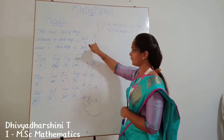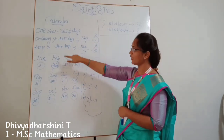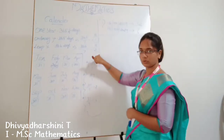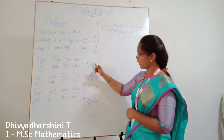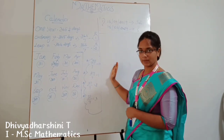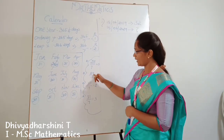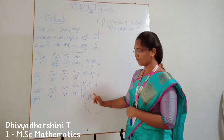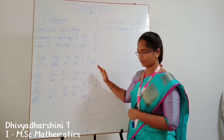So we fix these values: ordinary year gives remainder 1, leap year gives remainder 2. And for month day-counts: 28 days → 0, 29 days → 1, 30 days → 2, 31 days → 3.